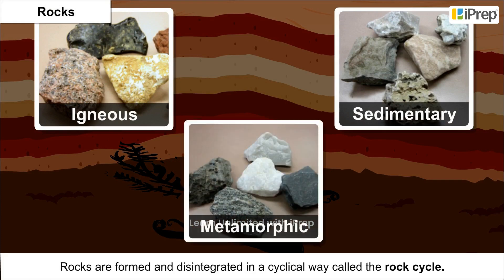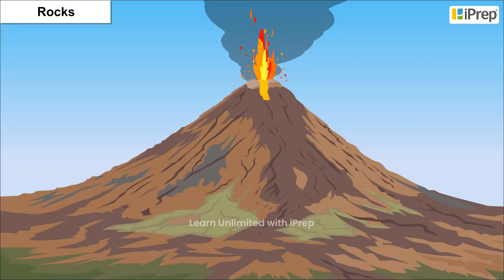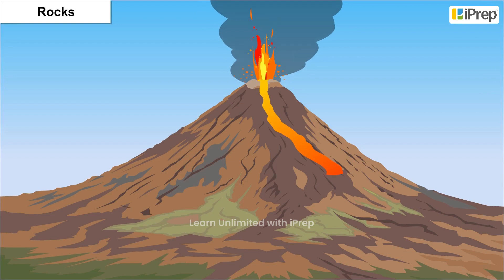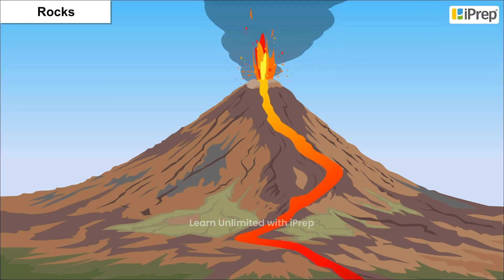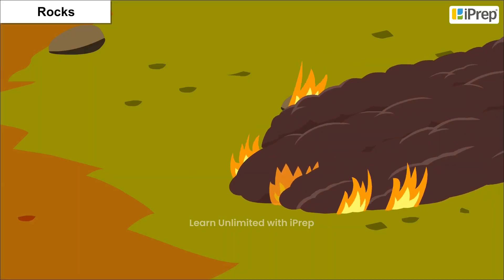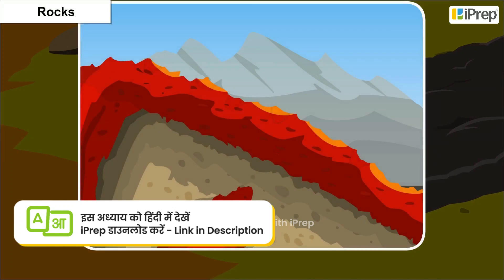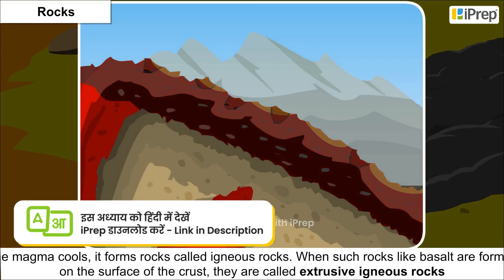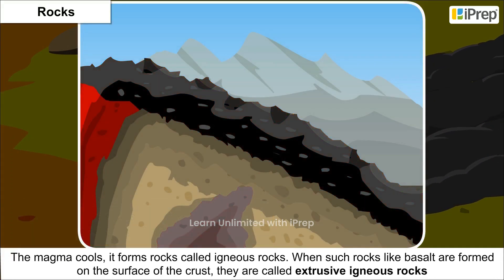Rocks are formed and disintegrated in a cyclical way called the rock cycle. When a volcano erupts, the molten lava flows out and pours onto the earth's surface in the form of molten magma. When the magma cools, it forms rocks called igneous rocks.